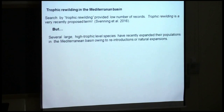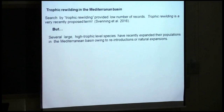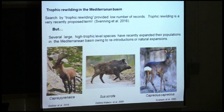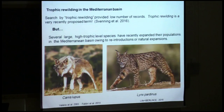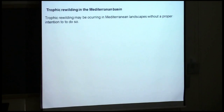Several large, high trophic-level species have recently expanded their populations in the Mediterranean Basin, owing to active reintroductions or to natural expansions. Some examples we have seen are large ungulates, but also predators — we have wolves and the Iberian lynx as top predators.